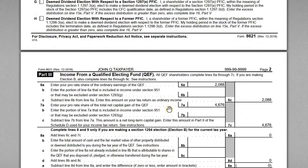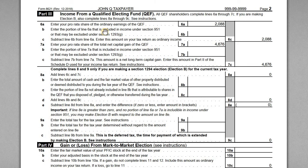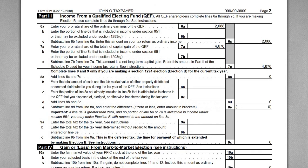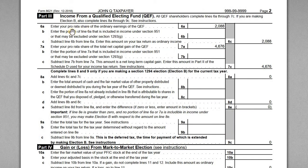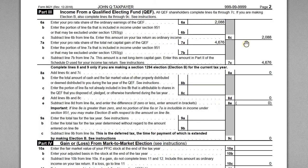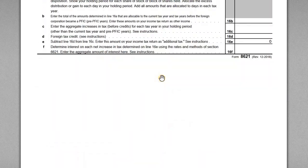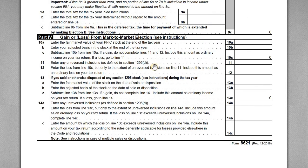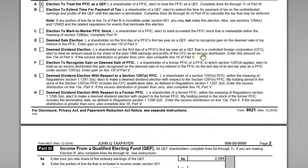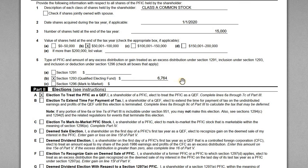Now let's get into Part 3, where we actually have the QEF information. This part is completed if we are making the QEF election, and if the election is in effect in future years you would complete this as well. Recall from our fact pattern: no dividend distributions, but John's allocations are $2,088 of ordinary earnings and $4,676 of capital gains. So we enter his pro rata share of ordinary earnings — $2,088 — and his pro rata share of net capital gains — $4,676. Those are the two income amounts disclosed on this 8621. The rest of the form is left blank because none of the other items apply — no Section 1294 elections, we're not in 1291 treatment, and we're not making a mark-to-market election. The total income inclusion is $6,764.